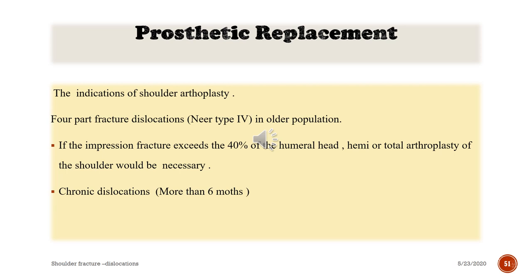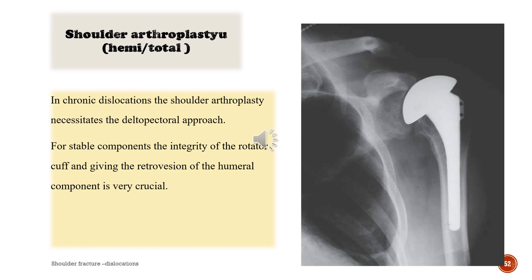Indications of shoulder arthroplasty: four-part fracture dislocations near four in older population; if the impression fracture exceeds 40% of the humeral head, hemi or total arthroplasty will be necessary; chronic dislocations more than six months are also candidates for prosthetic replacement. In chronic dislocations, shoulder arthroplasty requires the deltopectoral approach. For stable components, integrity of the rotator cuff and correct retroversion of the humeral component are crucial.